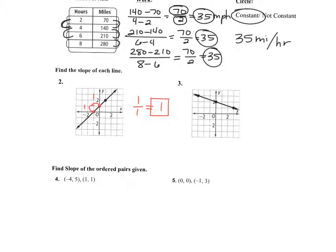So your slope is one over one, or you can just say it's a slope of one. What would the slope of the second line be then? Number three — it's not the same. Problem number three.